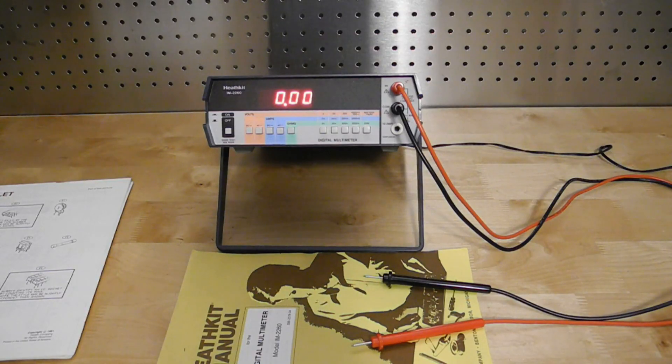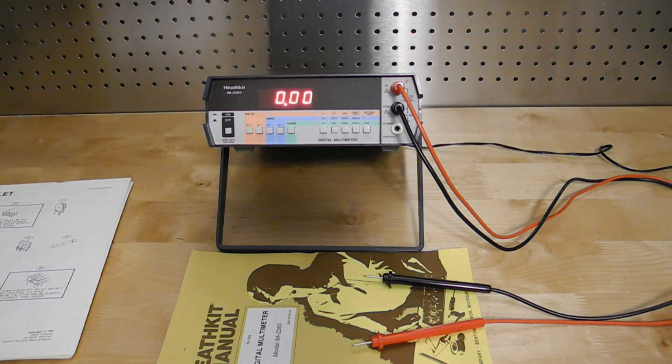While it lacks some of the bells and whistles of modern DMMs, this is a nice basic digital meter which is adequate for electronics bench use even today, particularly if it's calibrated. On the market for 10 years, this was the last Heathkit-designed digital multimeter kit that the company sold, up to the point where they exited the kit business in 1991.